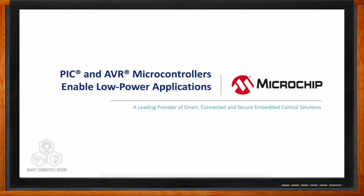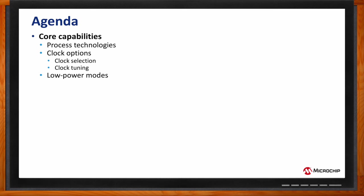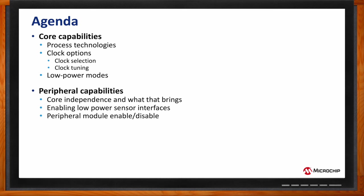Thank you so much for joining me. We're talking about enabling low power applications with PIC and AVR microcontrollers today. The first thing we'll cover is core capabilities, including clock options and low power modes. The second is peripheral capabilities — integrating more into hardware to enable core independence. We'll also talk about analog peripherals, low power benefits of integrating analog, and the ability to enable and disable things on the fly. We'll show a couple of examples to reinforce the concepts, and then cover some resources.